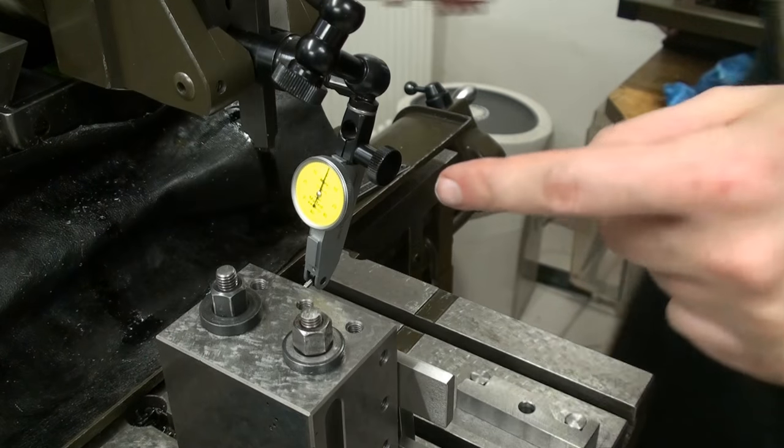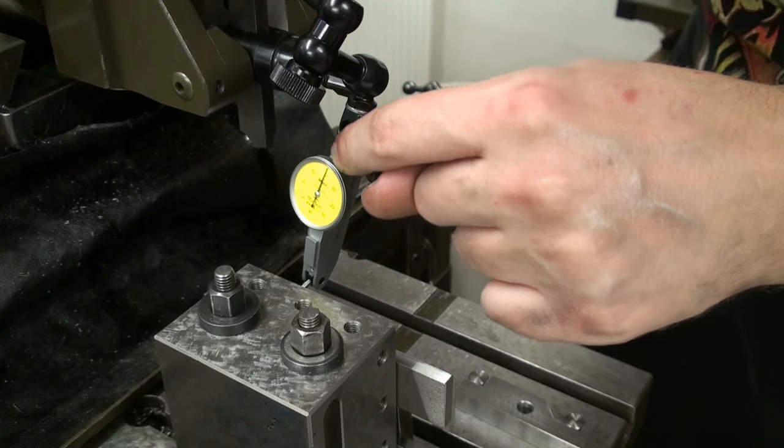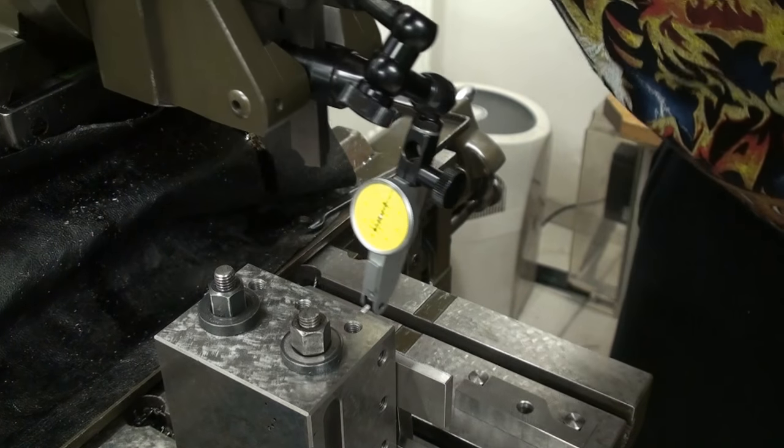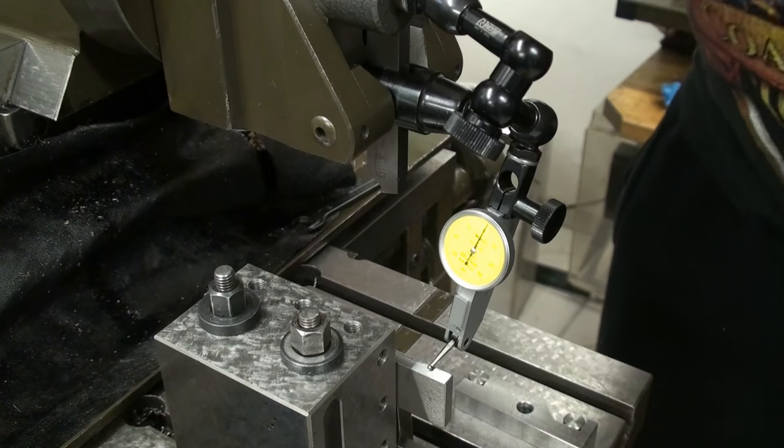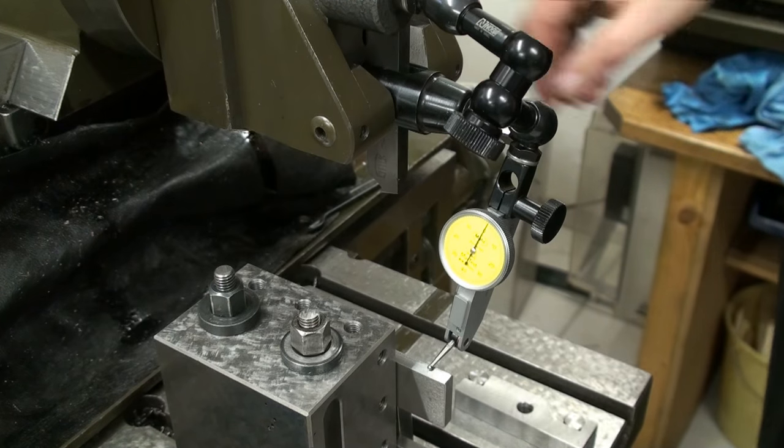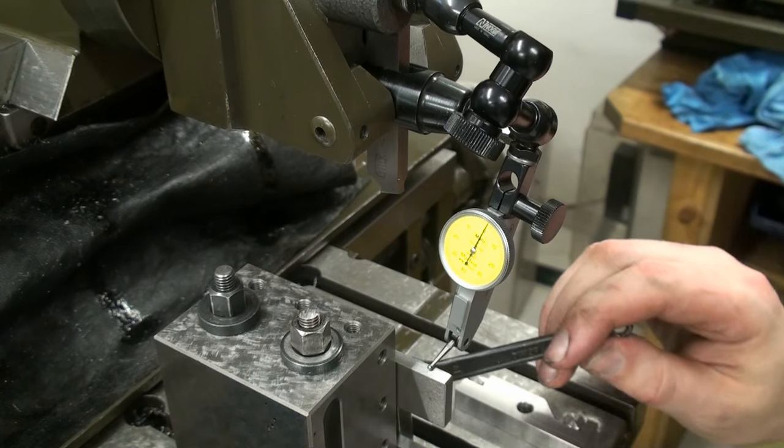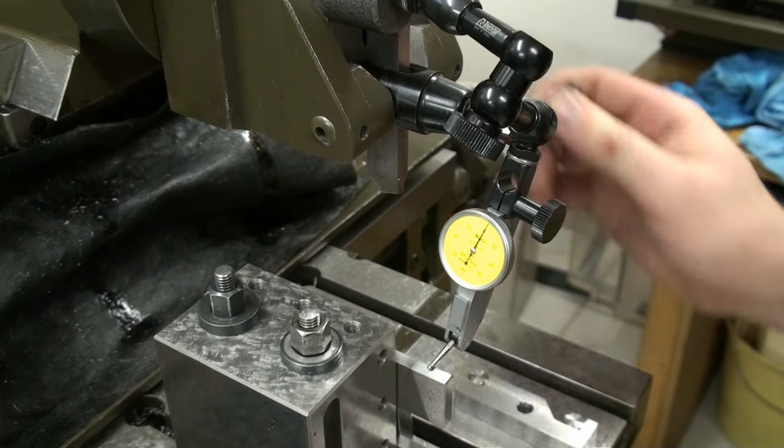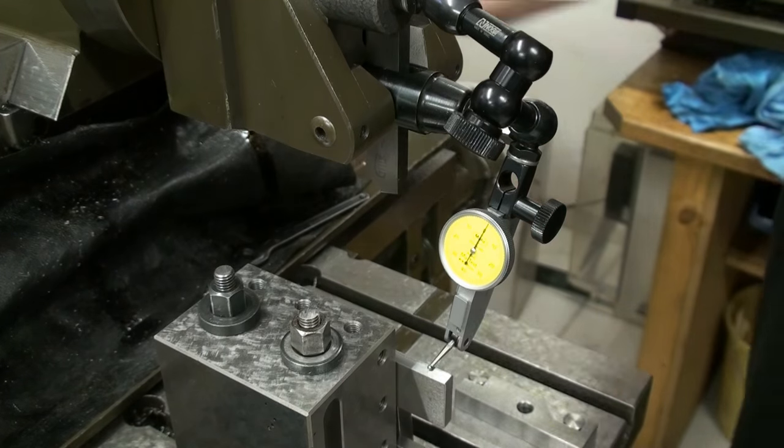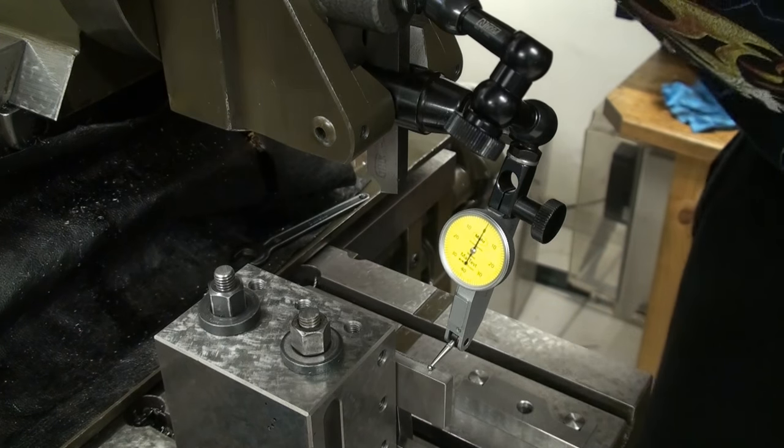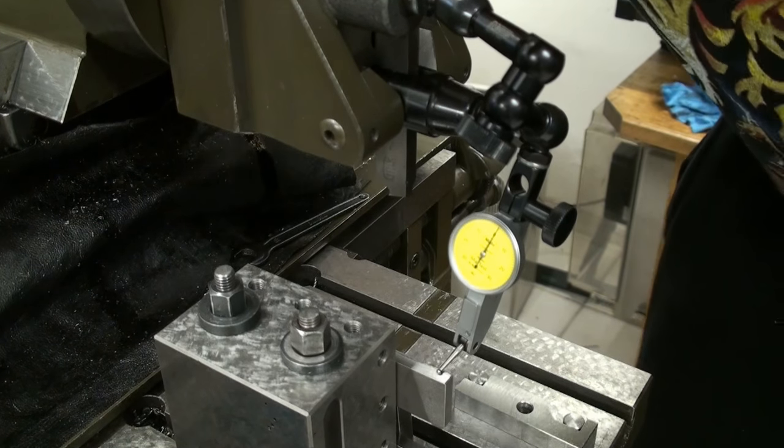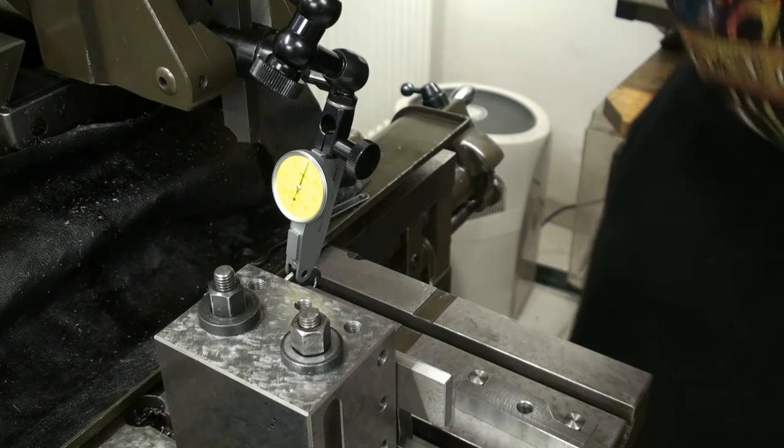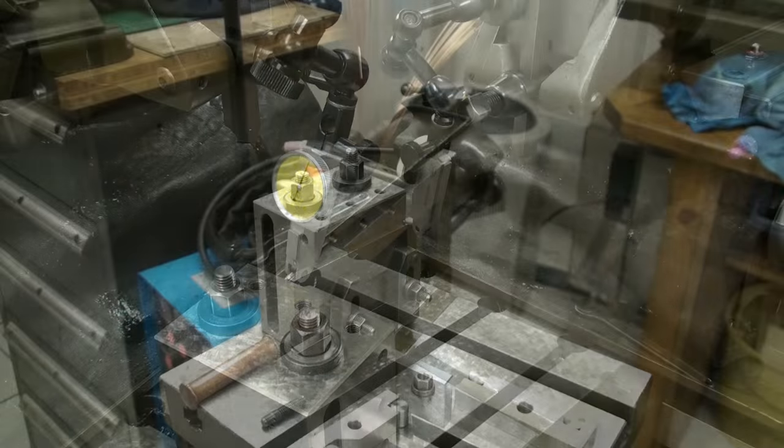As you can see from this side of the machine, the indicator shows zero back here and zero in front here. So now we can lock it in place, tighten it down. This is just a parallel where the sine bar will rest on, and we go back just to idiot check. Okay, that's good.